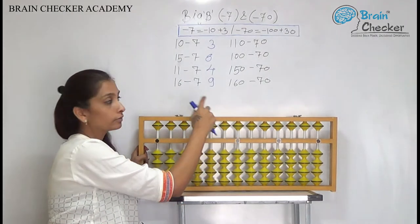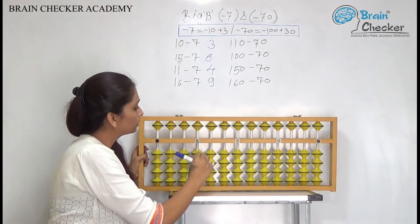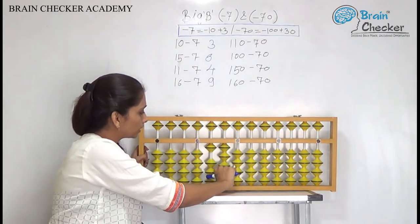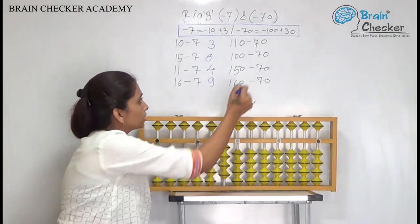Same way for the 70 we will use the 110. So 110 less 70. So add 30 less 100. Answer is 40.